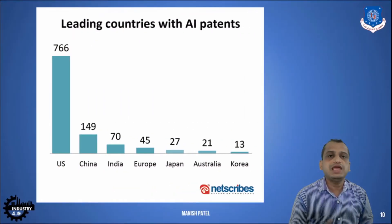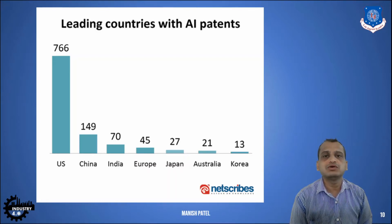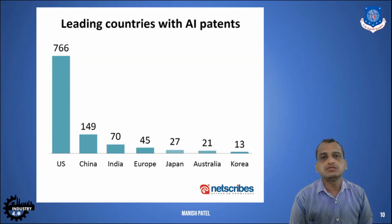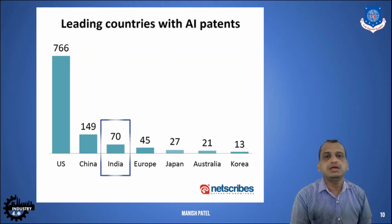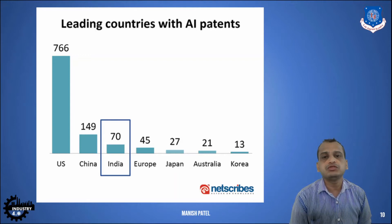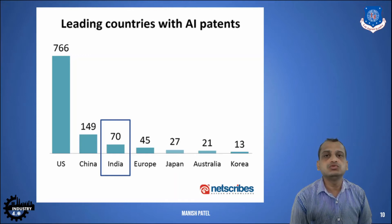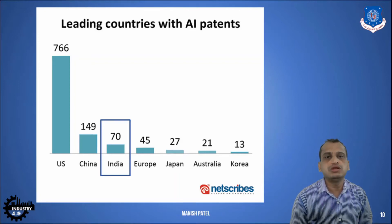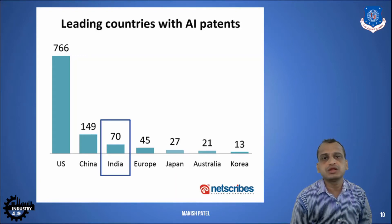Talking about AI patents — in the previous lecture we covered the top 10 trends of 2021, with artificial intelligence ranked first. Regarding patents, India has almost 70, while the US leads with almost 766 AI-related patents. This also reflects R&D expenditure — China spends almost double what India spends yearly on R&D relative to GDP, and the US similarly outspends India in research and development.